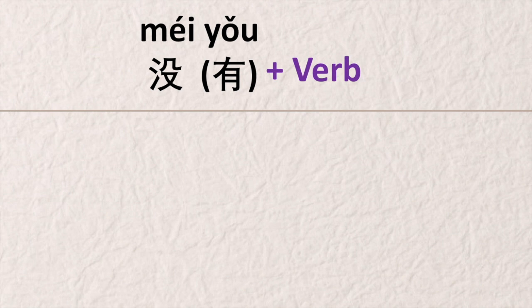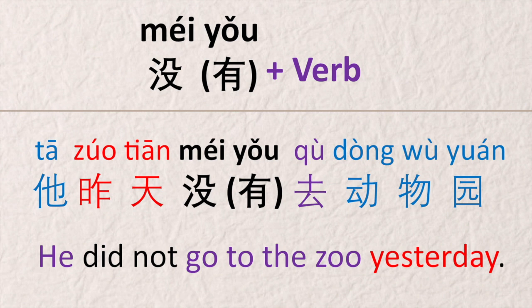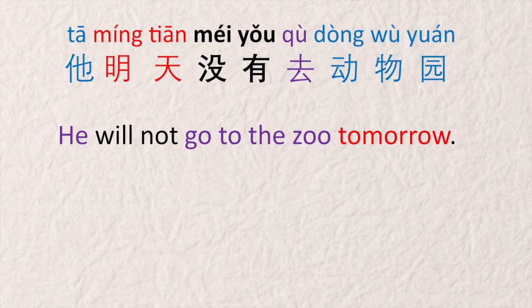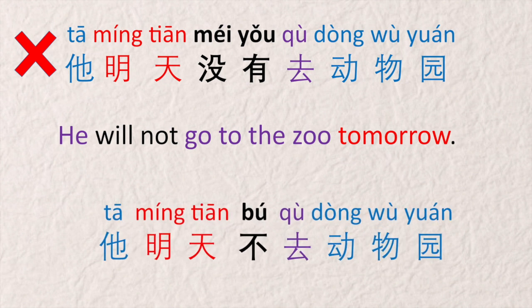Now let's look at the second negation word 没有. It's generally used to negate verbs in the past. For example, 他昨天没有去动物园 — he didn't go to the zoo yesterday. That's past tense, so we use 没 or 没有. Do you know how to make a sentence like 'he will not go to the zoo tomorrow'? We can't say 他明天没有去动物园 — that's wrong, because tomorrow is future tense and we don't use 没有 for future. We use 不: 他明天不去动物园. 不 is for the present and future.